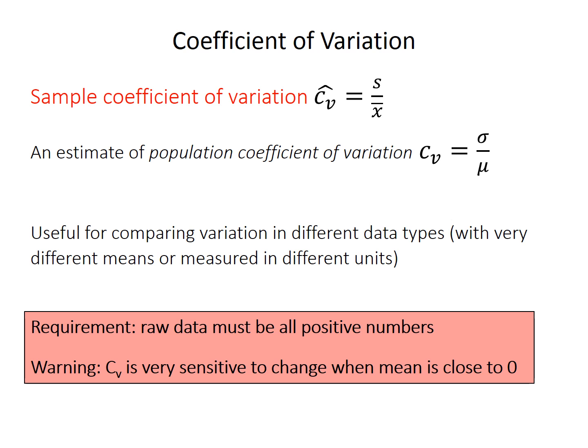It's important to note that the coefficient of variation is only meaningful if all of your measurements are positive numbers. If you have some negative numbers, it's not going to make any sense. And you also should be warned that the calculated number is going to be quite sensitive to changes in the data if the mean is close to zero. Because we're dividing by the sample mean, if that's a very small number, if the mean goes from .001 to .002, your coefficient of variation will change a lot, even for very tiny differences in the mean.